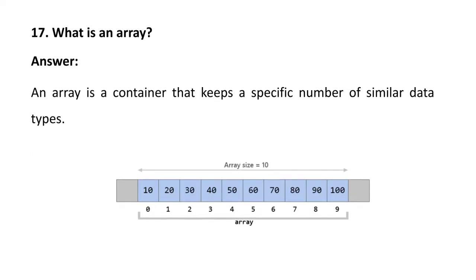Next question: what is an array? An array is a container that keeps a specific number of similar data types — a homogeneous type of data. For example, here you can see one array with a size of 10, meaning you can store 10 different values, all of the same type. Here all integers are stored in that array, with indices 0 through 9.